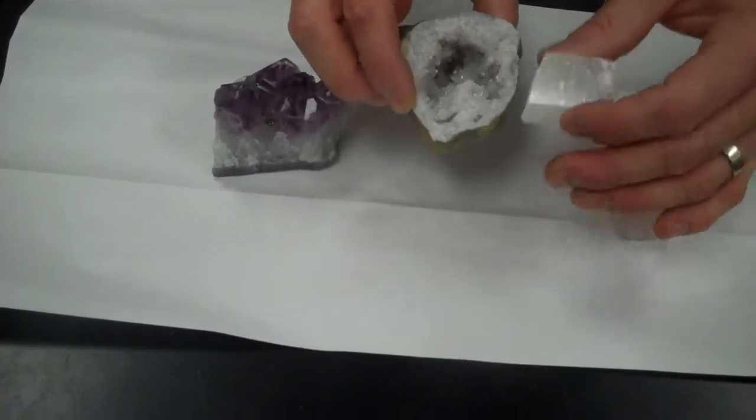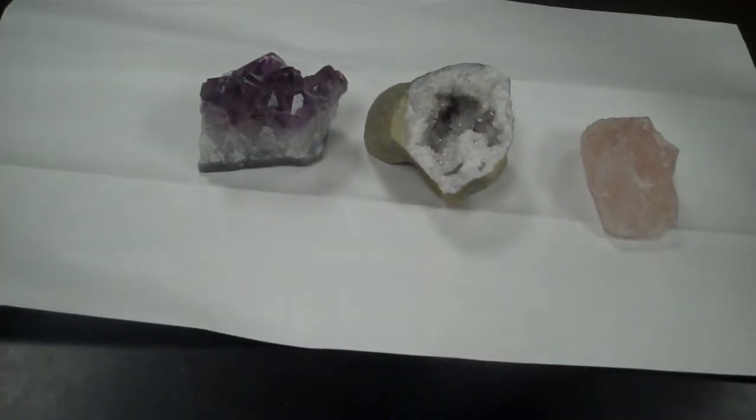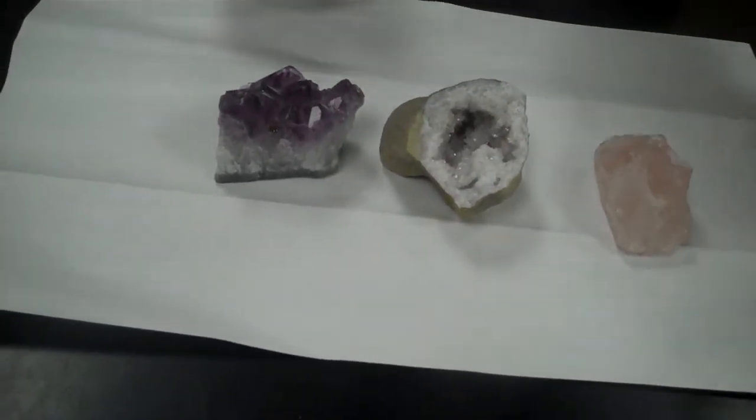like this calcite and this quartz have similar color. So you wouldn't be able to identify them just based on the color. But it can be one of the things that we use to help identify them. So that's color.